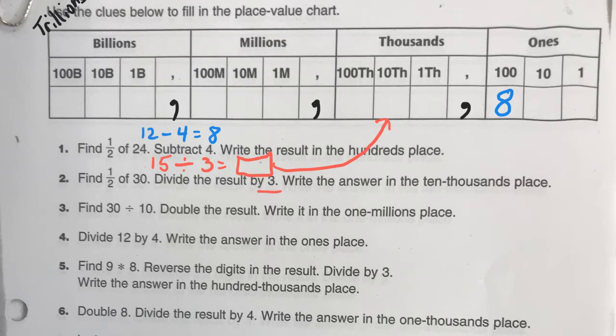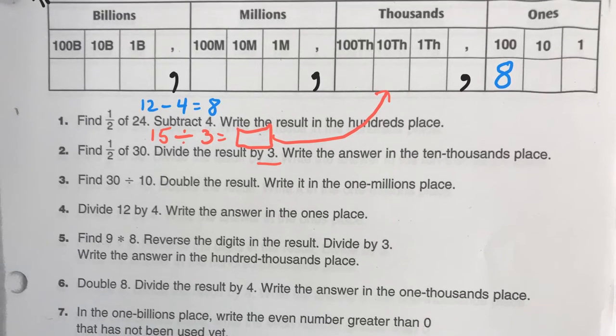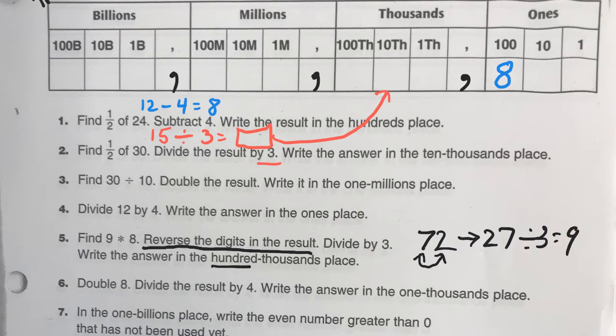Let's go down to number 5. That's a little bit different. So here, first thing it says is find 9 times 8. Hopefully, you know that is 72. But then, we need to reverse the digits in the result, which means we need to switch the two numbers. Reverse the digits. So, that would be 27. Then, divide by 3. And hopefully, you know that is 9. And that goes into the 100 thousands place.